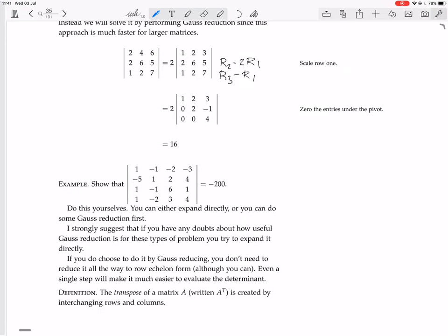Now we have: show that this determinant of this 4 by 4 is equal to minus 200. So you can either expand directly or you can do some Gauss reduction first. I strongly suggest that if you have any doubts about how useful Gauss reduction is for these types of problems, try and expand it directly.